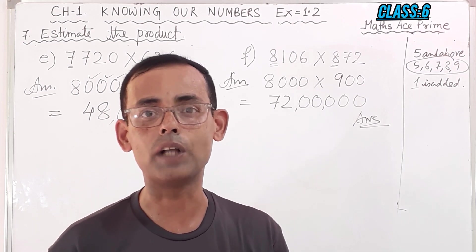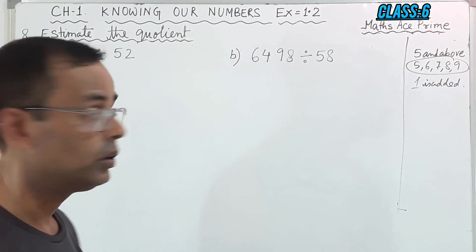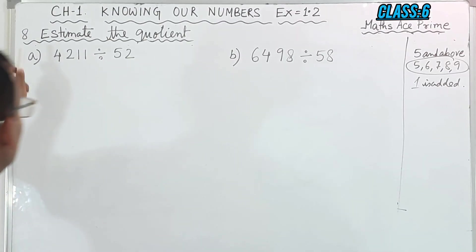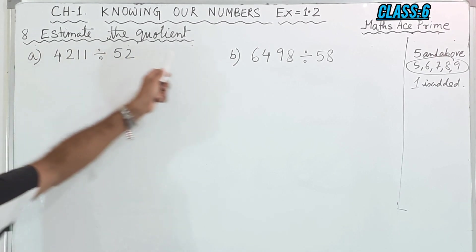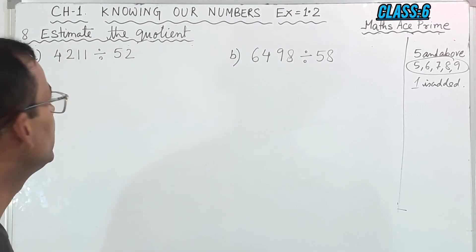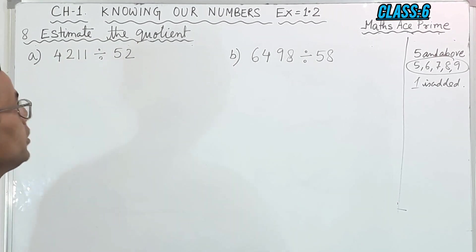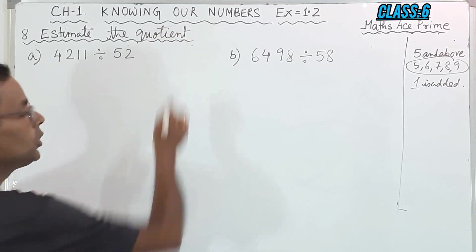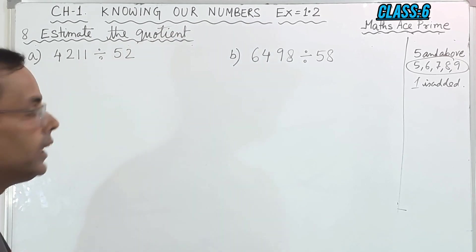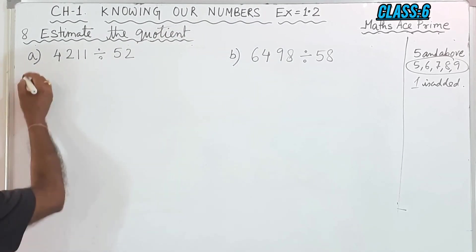Now we will move on to the next question — question number 8: Estimate the Quotient. That means you have to divide. When you divide, you are getting the quotient. So let us do the first one, number A.